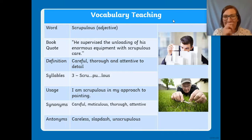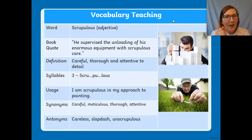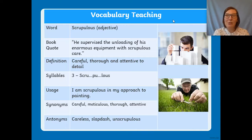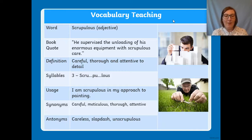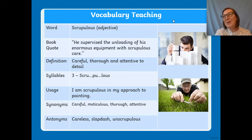Scrupulous is an adjective. The definition is: careful, thorough, attentive to detail. It has three syllables: scru-pu-lous. For example: 'I am scrupulous in my approach to painting' — that means careful, thoughtful, and attentive to detail. Synonyms: careful, meticulous, thorough, attentive. Antonyms — the opposites — are: careless, slapdash, and unscrupulous. So you might say 'they are slapdash in their approach to painting.'